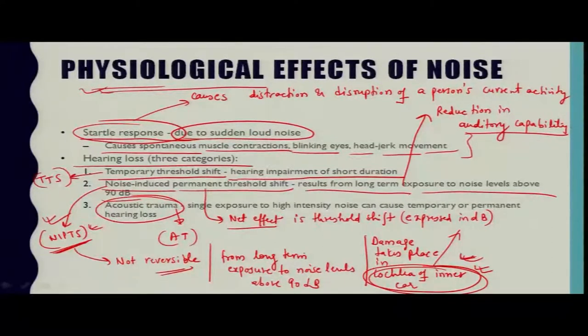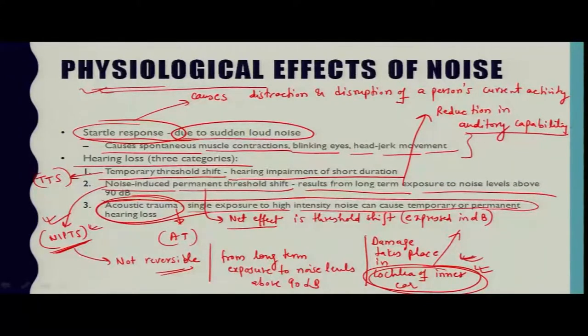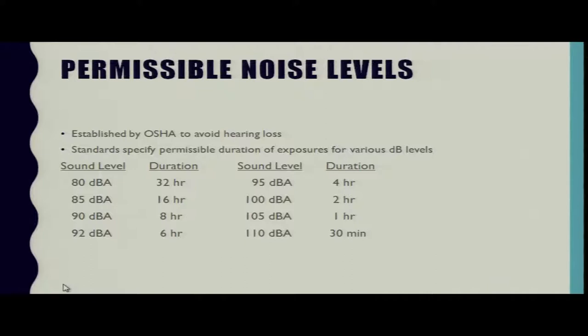The third kind of hearing loss is acoustic trauma, caused by a single exposure to high-intensity noise of short duration. Depending on the intensity of the noise, the hearing loss can be temporary or permanent. Now we come to the next topic: permissible noise level. One agency called OSHA — Occupational Safety and Health Administration — sets noise level standards designed to avoid hearing loss.